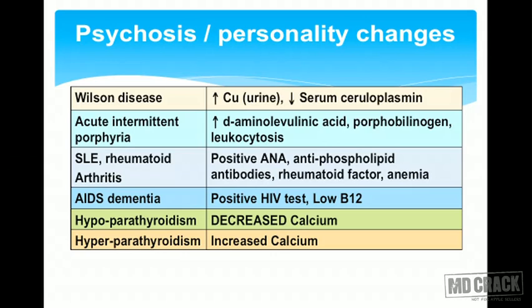AIDS dementia may show a positive HIV test and low vitamin B12 levels. Hypoparathyroidism may also be associated with psychotic changes or personality changes, and in this condition we will find decreased calcium. As opposed to this, in hyperparathyroidism we may find increased calcium levels. It's important to do all these investigations when we are seeing psychosis or personality changes, to rule out any associated medical condition.